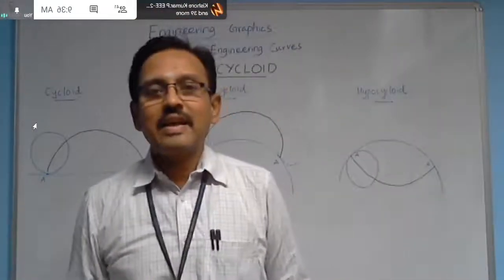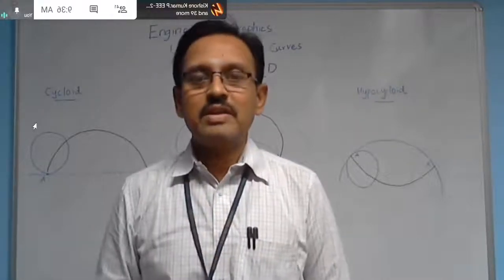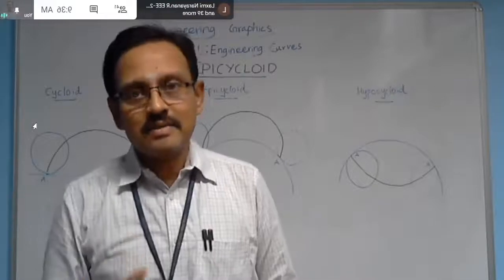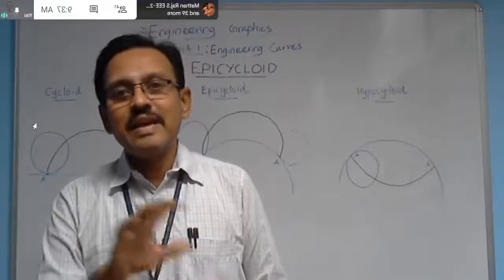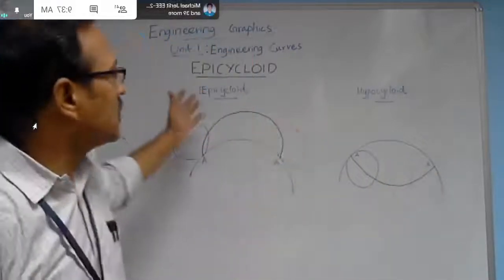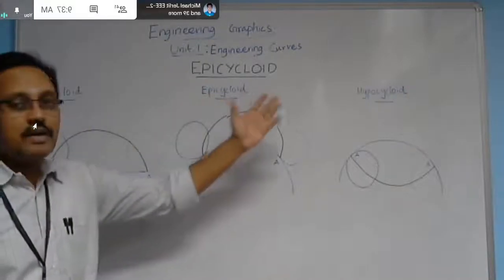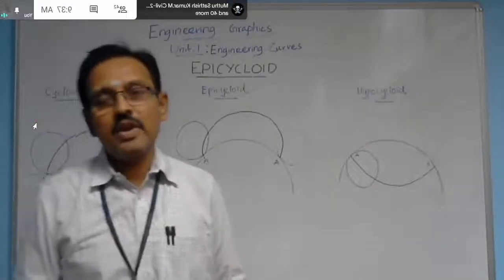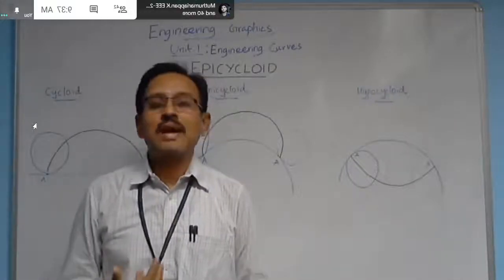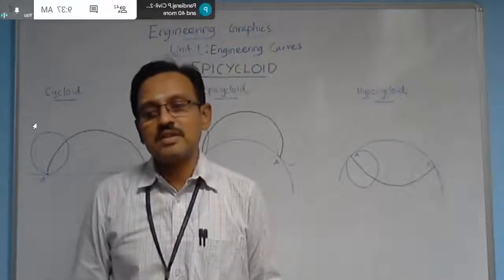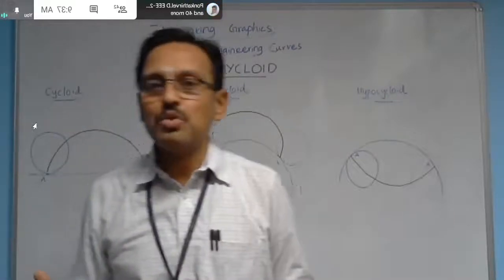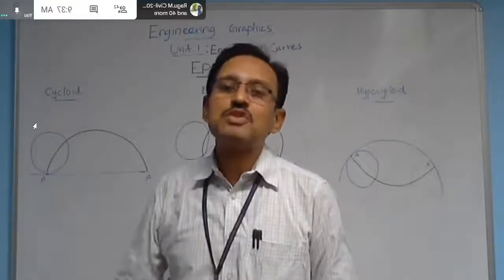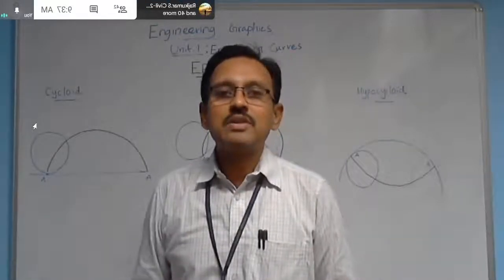These special curves are used in engineering applications. In case of gear tooth — you may have seen a gear in an automobile engine or small mechanical applications — the application of these curves, cycloid, epicycloid, and hypocycloid, is found in gear tooth profile manufacturing. Involutes also find application in gear tooth manufacturing as well as in cam profiles. A cam is a special mechanism used in IC engines.